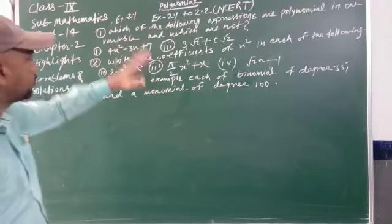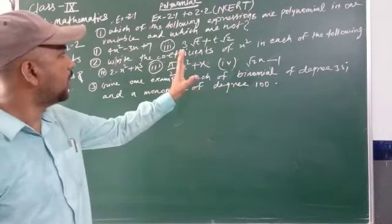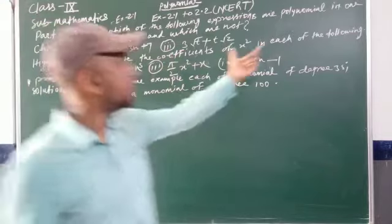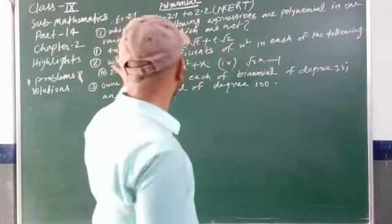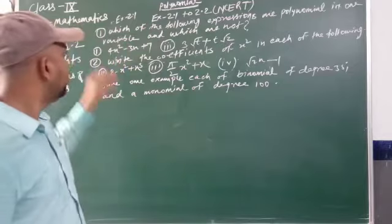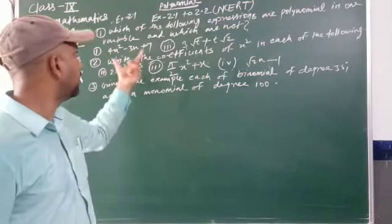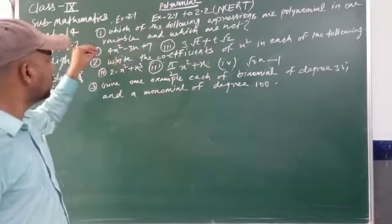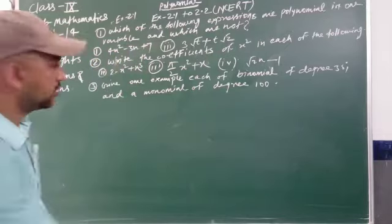The first question is: which of the following expressions are polynomials in one variable, and which are not? This question has two conditions. The first condition is that the given expression should be a polynomial, and the second condition is that the given expression should be in one variable. We will write the expression and determine if it qualifies.